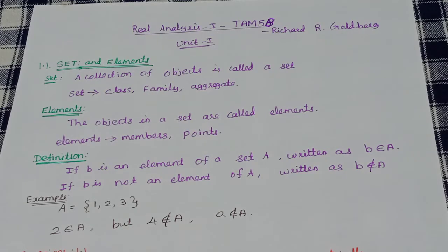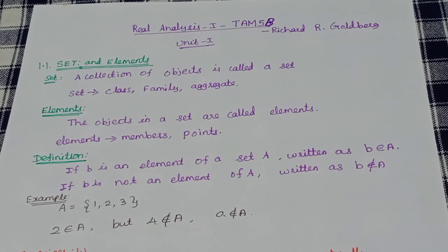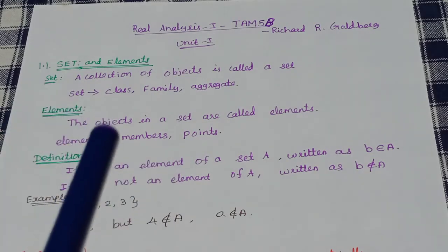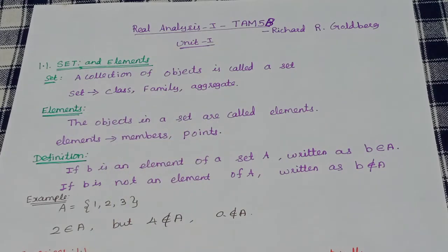The first section is Sets and Elements. A set is a collection of objects. You can also use the terms class, family, or aggregate. Let's give an example: in a college, there are 3rd year math students — a collection of 3rd year B.S.E.M.A.C.S.S. students. That's a set.